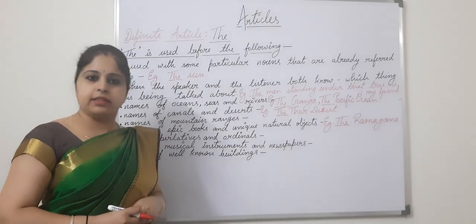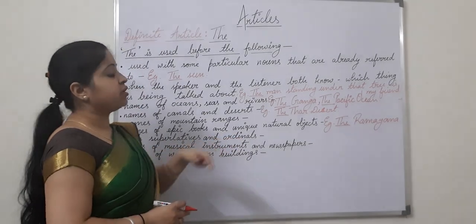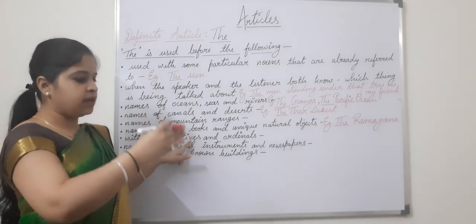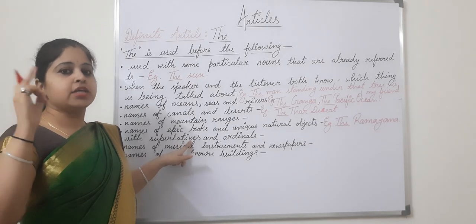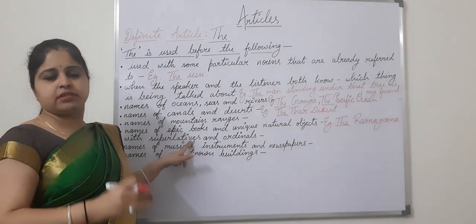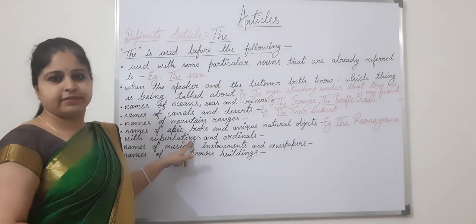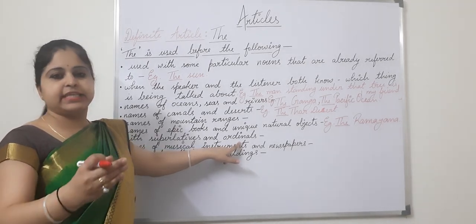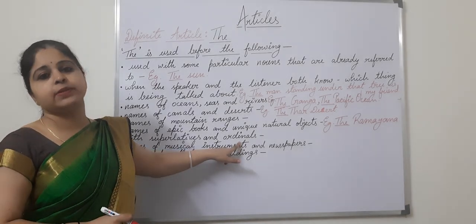Next: use 'the' with superlatives and ordinal numbers. Superlatives are the superlative degree of adjectives — tall, taller, tallest; big, bigger, biggest. They carry 'the' before them: the best, the worst, the tallest, the smallest. Ordinal numbers — first, second, third, fourth — also take 'the' before them.